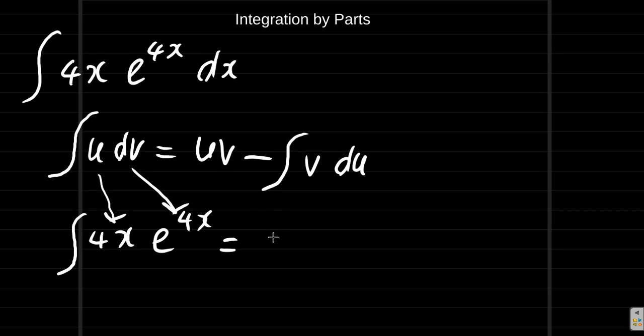This equals u, which is 4x, this is our u, times v. Now dv is e to the 4x. How do we move from dv to v? We have to integrate.